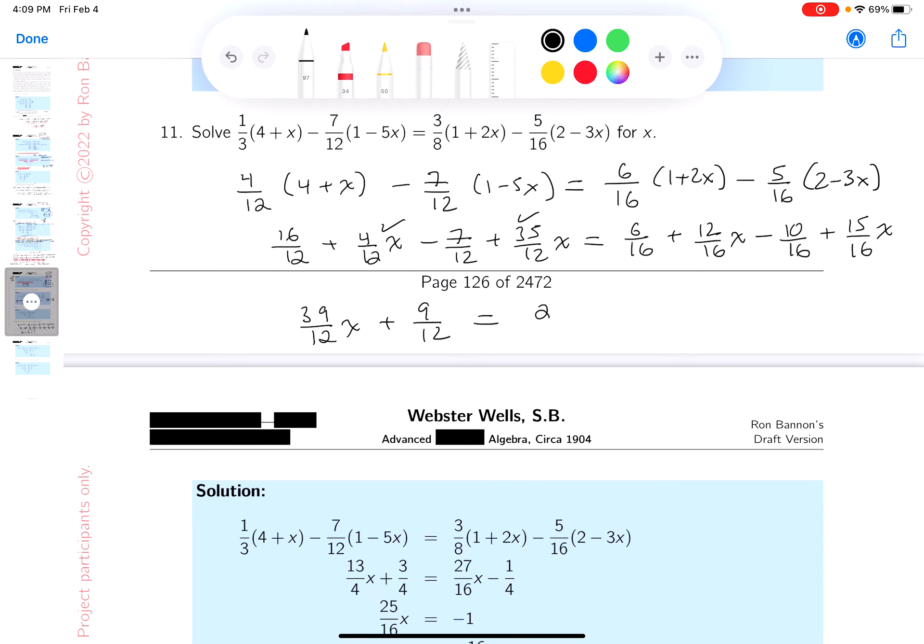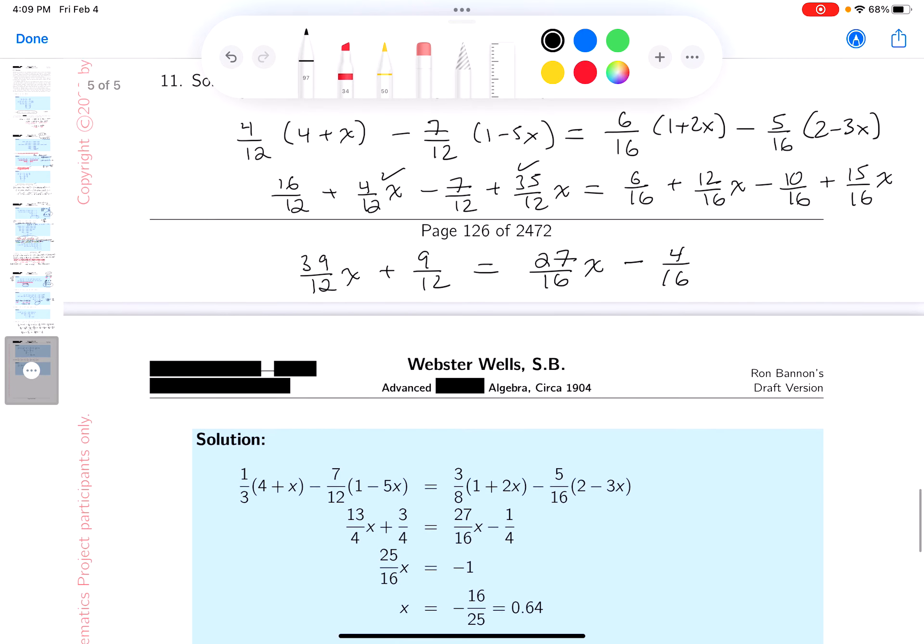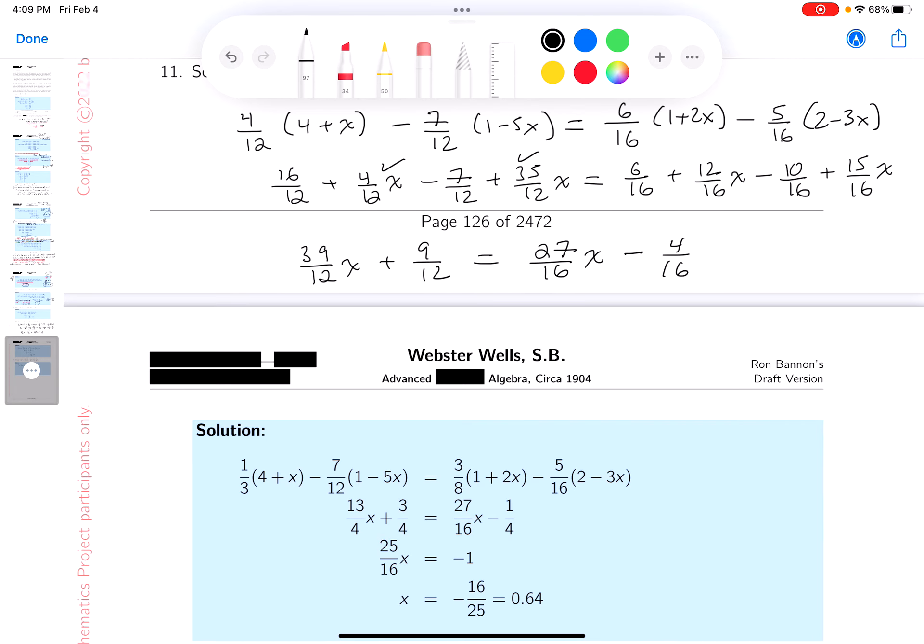And I think you combine those together as well. So twelve and fifteen is twenty-seven sixteenths of an x and six sixteenths minus ten sixteenths is minus four sixteenths.